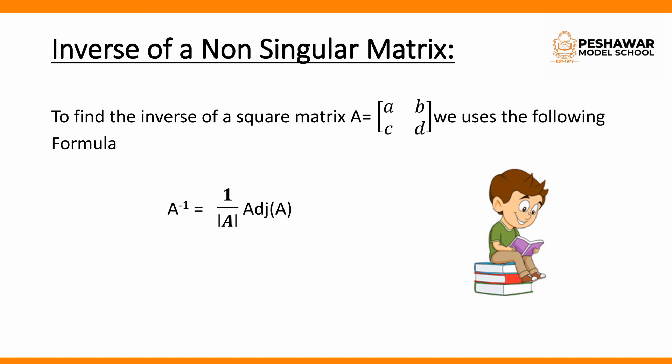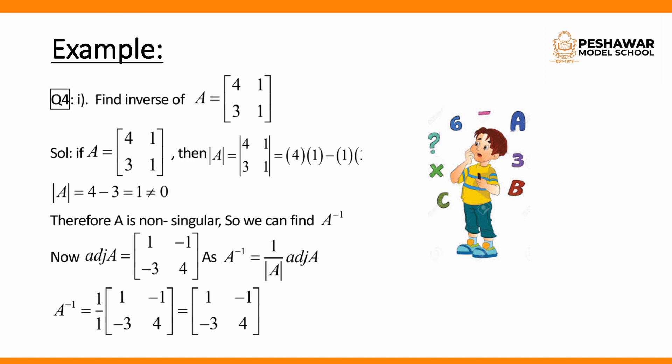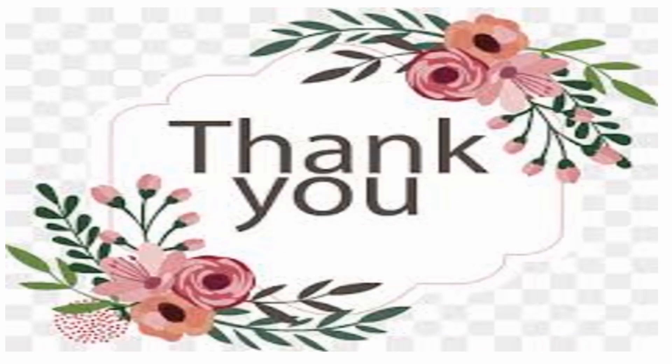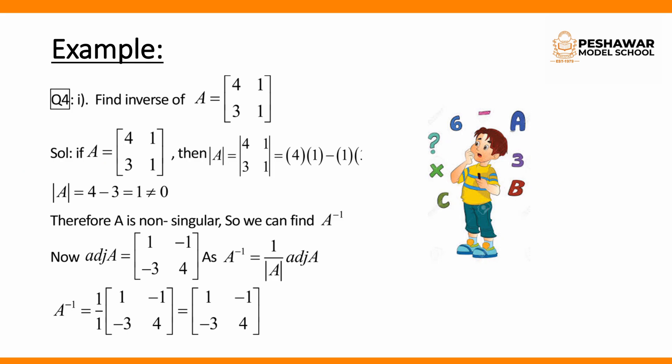Now, how can we find the inverse of a non-singular matrix? Suppose we have a square matrix equal to [a, b; c, d]. We use the formula: A inverse equals 1 over determinant of A, multiplied by adjoint of A. Let's explain with an example: matrix A equals [4, 1; 3, 1].